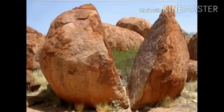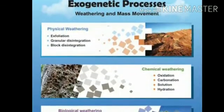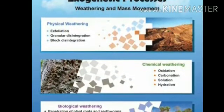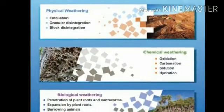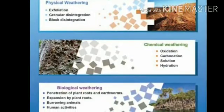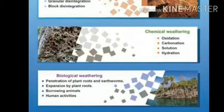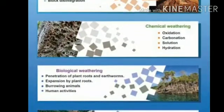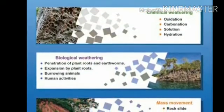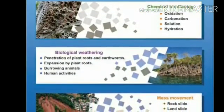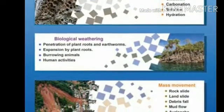In this lesson we are going to study the types of weathering. Weathering is classified as: first, physical weathering — also known as mechanical weathering — which includes exfoliation, granular disintegration, and block disintegration. Next is chemical weathering, which includes oxidation, carbonation, and solution. Next is biological weathering, due to living organisms. We will also study mass movements — rapid and slow — such as rockslide, landslide, and debris fall.